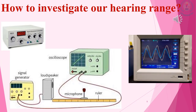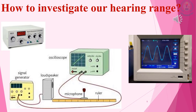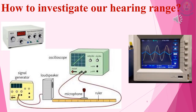The frequency range of the human ear is from 20 hertz to 20,000 hertz. Sounds of frequency below 20 hertz and above 20,000 hertz we cannot hear, but some other animals can hear those sounds.